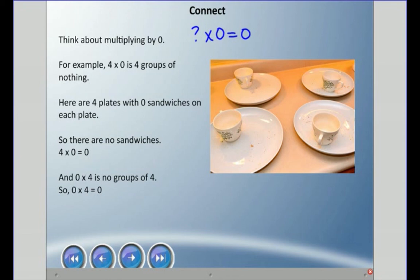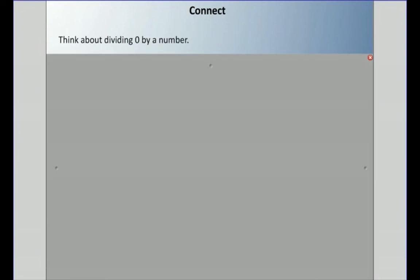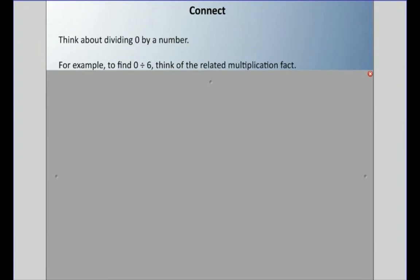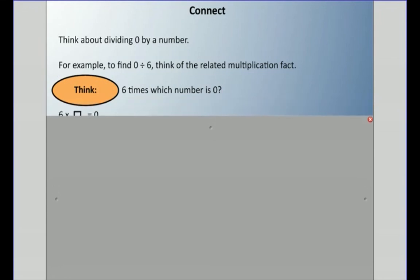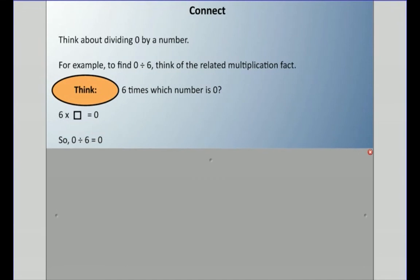What about dividing zero by a number? For zero divided by six, think of related multiplication facts: six times which number is zero? Like we just said, anything times zero is zero, so zero divided by six is zero.